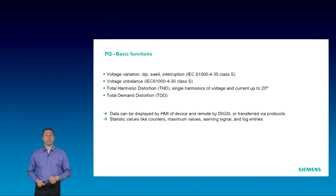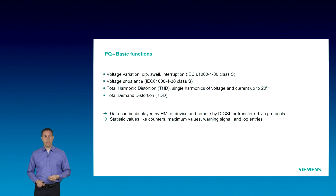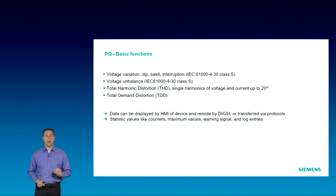THD is the sum of all measured harmonics related to the fundamental. We have all values of any single harmonic up to the 20th, and this for voltages and for currents as well.